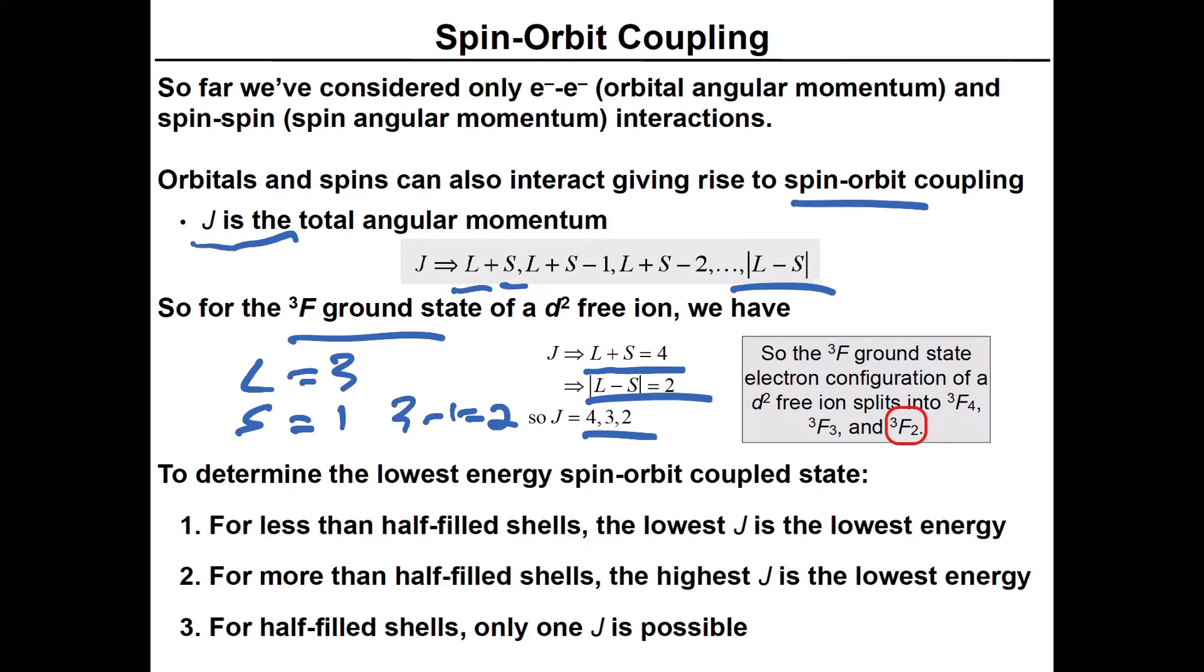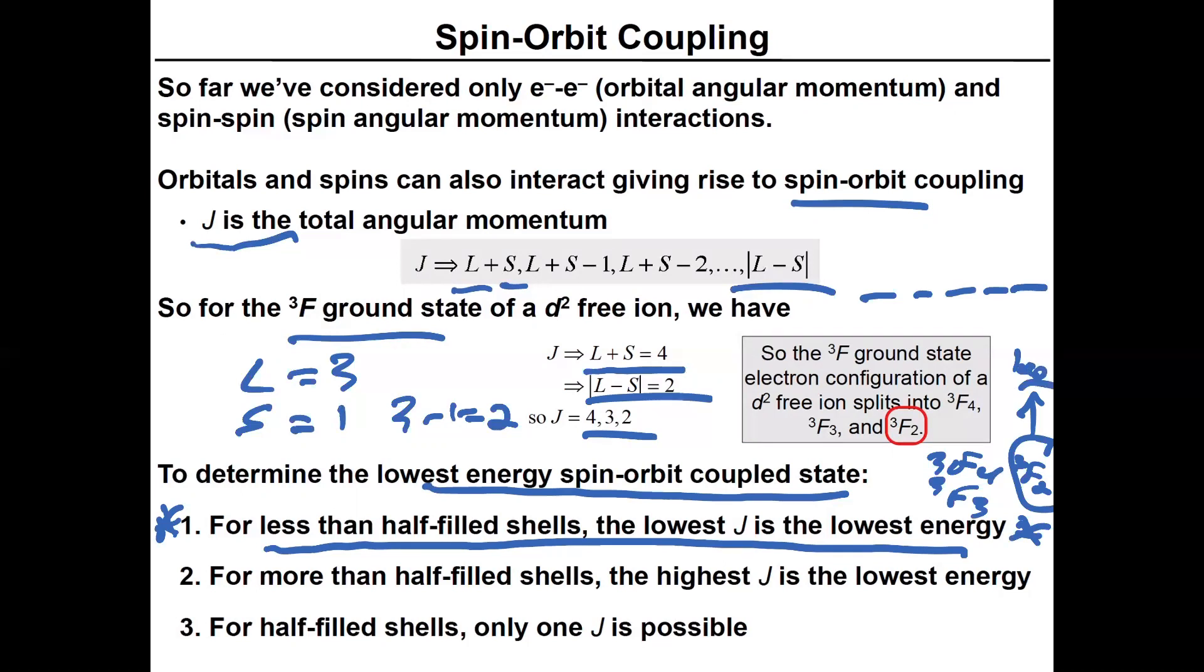These are the spin-orbit coupling sub-levels now. The way that this is going to work is the lowest energy spin-orbit coupled state is when you have less than half-filled shells, the lowest J is the lowest energy. We have a degenerate set of 5D orbitals, so this is much less than half-full. So you're going to have effectively a triplet F4, triplet F3, and a triplet F2. And the triplet F2 is going to be the lowest energy state in that grouping. If you go beyond half-filled shells, the highest value of J ends up being the lowest in energy. So you basically flip around the ordering, but it's still ordered because of spin-orbit coupling. And when you have a half-filled shell, only one value of J is actually plausible to have. For the D2 configuration, the triplet F2 is the actual ground state.